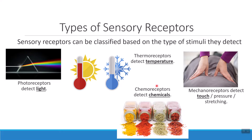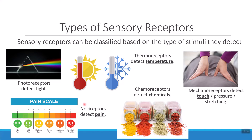Chemoreceptors detect chemicals. The last kind of receptor is what we call a nociceptor. Nociceptors are the type of receptor that specifically detect pain sensations. Pain is any other sensation that's too strong. So if it's too hot or too cold, I will actually detect that as pain. If I've got too much pressure or too much stretching, I'll detect that as pain. If a light is too bright, I'll detect that as pain. Nociceptors detect very extreme levels of these other kinds of sensations that the other specific receptors are detecting.